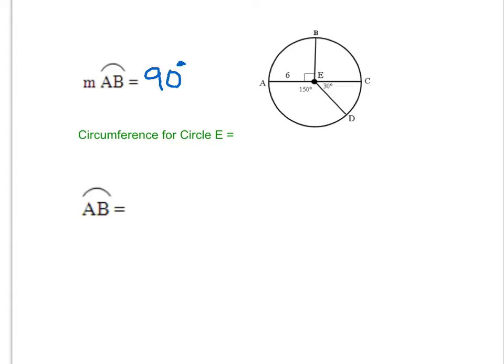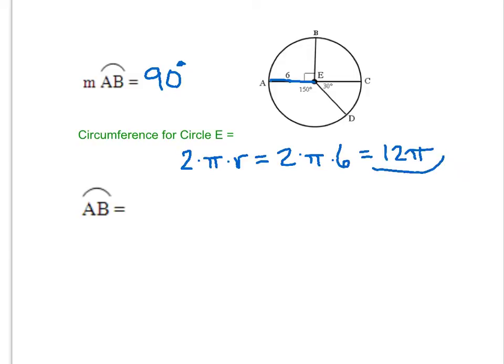Next we're going to find the circumference of circle E, because to find arc length we use a formula that involves circumference. Notice: when finding arc measure there's a little 'm', but when finding arc length it's just the arc name. Since the radius is 6, the circumference is 2 times pi times r, which gives us 12π.